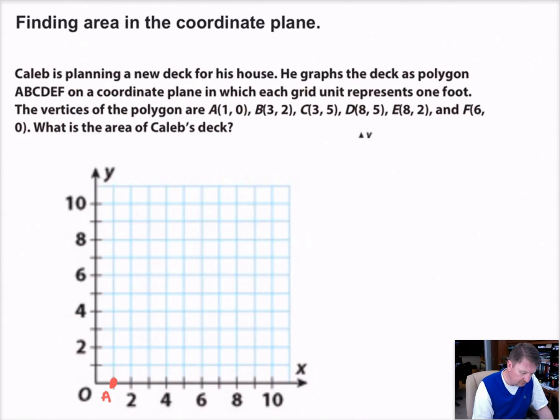We got those. C is at 3, 5. So 3, 5 is right here. That's point C. Point D is 8, 5. So all the way over to 8 and then up to 5. That's point D. Point E is 8, 2. Got that one. That's point E.